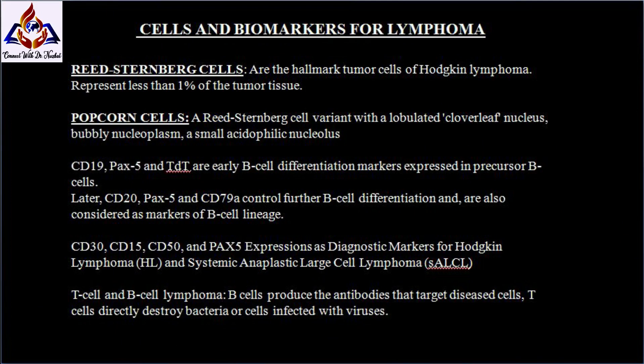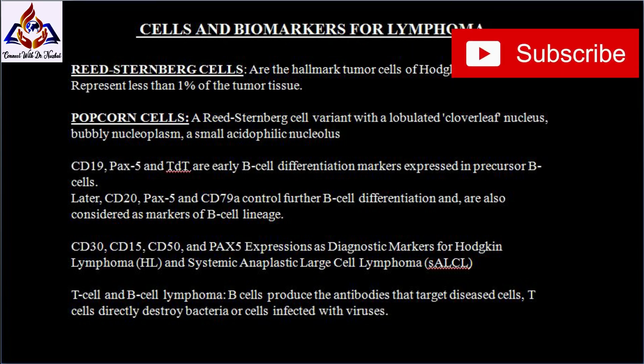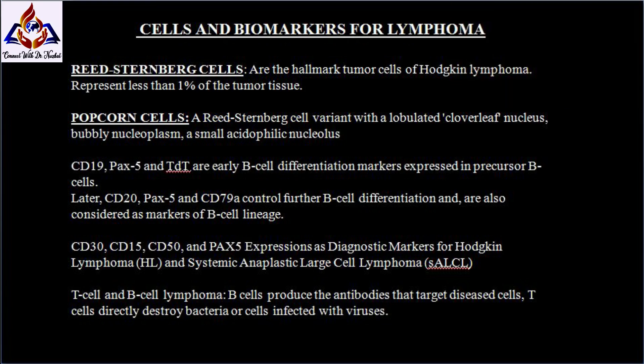Reed-Sternberg cells are the hallmark tumor cells of Hodgkin lymphoma, representing less than one percent of the tumor tissue. The majority of cells in the tissue include T-cells, B-cells, eosinophils, macrophages, and plasma cells. Popcorn cells are a Reed-Sternberg cell variant with a lobulated cloverleaf nucleus, bubbly nucleoplasm, a small acidophilic nucleus, and a small rim of cytoplasm.